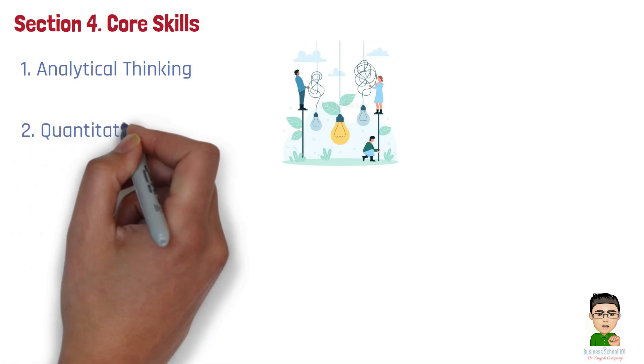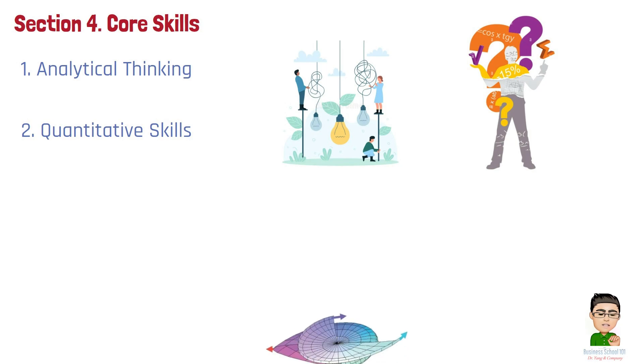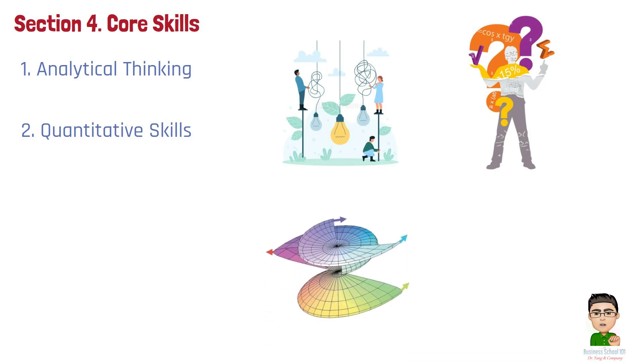Number 2. Quantitative Skills. Basic mathematical skills, including algebra and calculus, are important for working with economic models, interpreting graphs, and solving equations that describe economic behavior. These skills help in understanding concepts like elasticity, marginal analysis, and optimization.